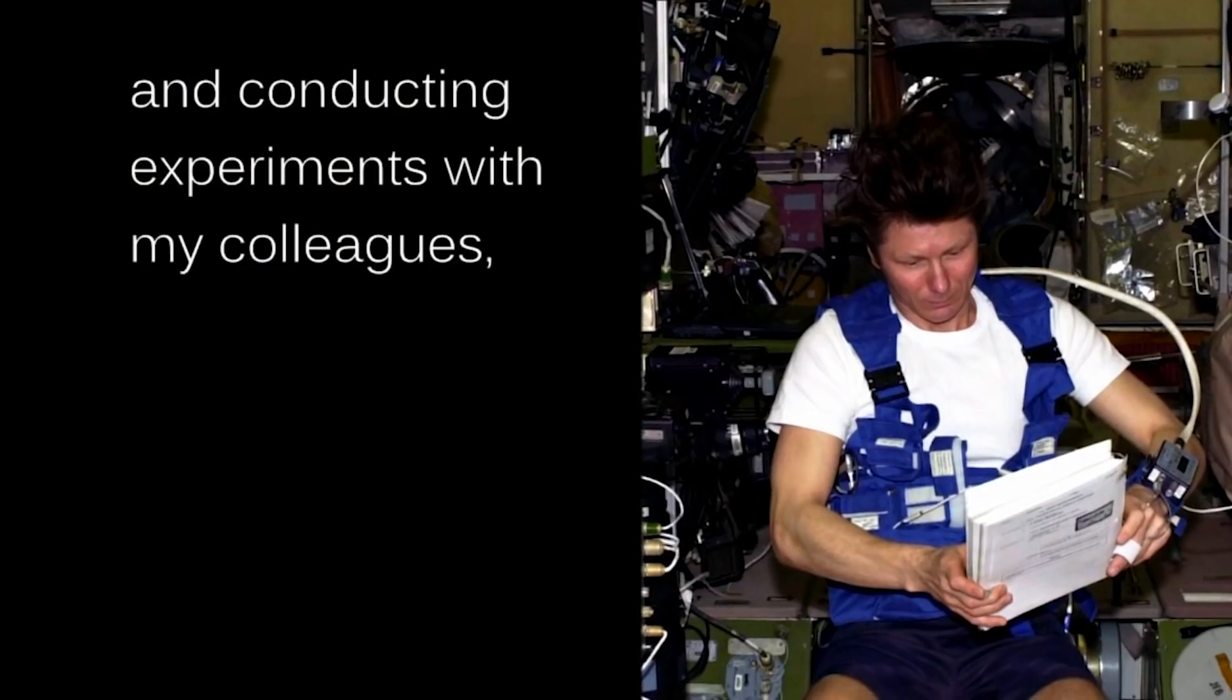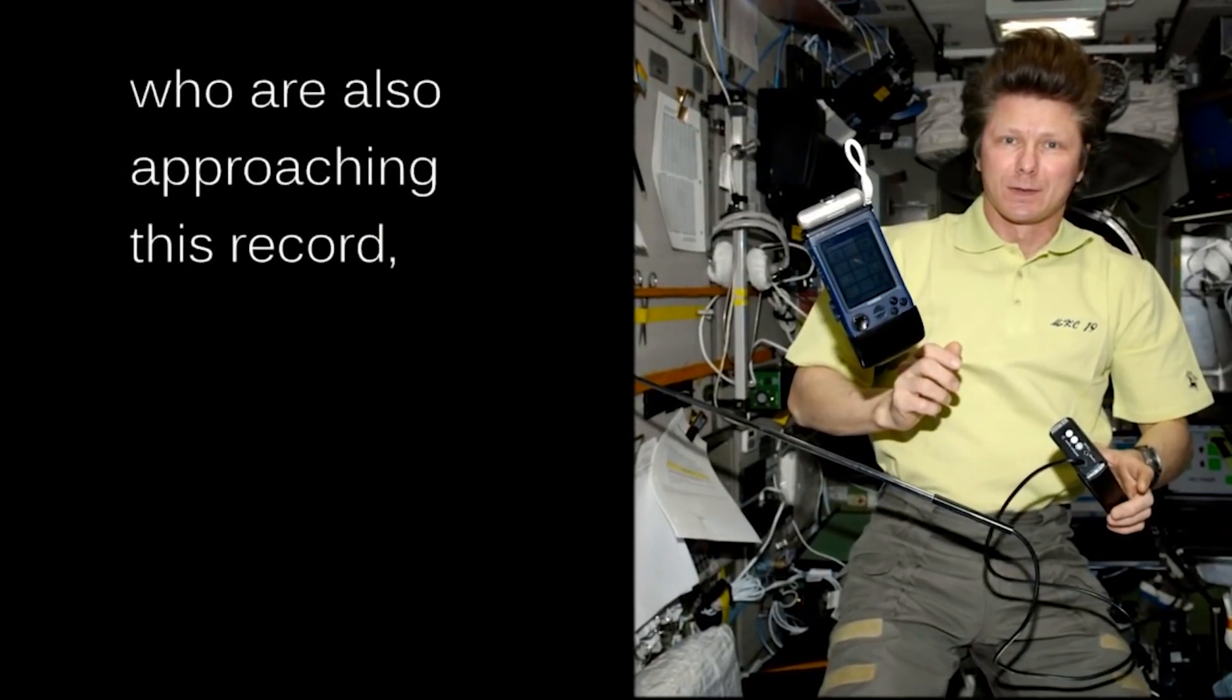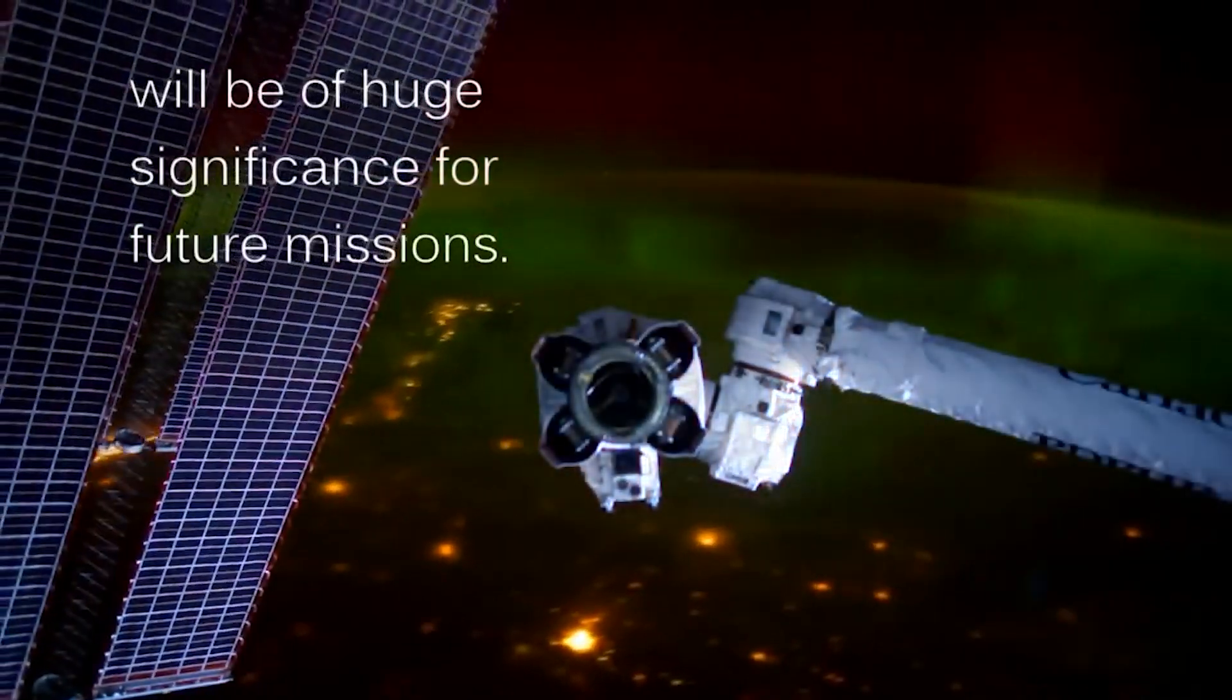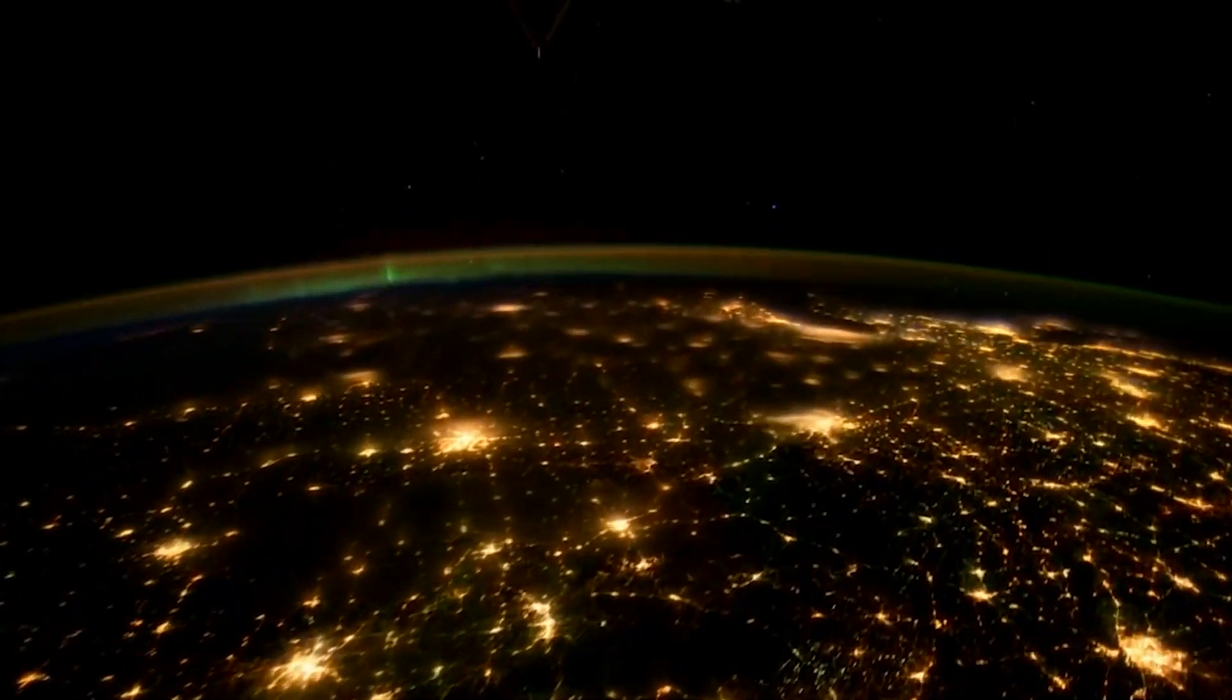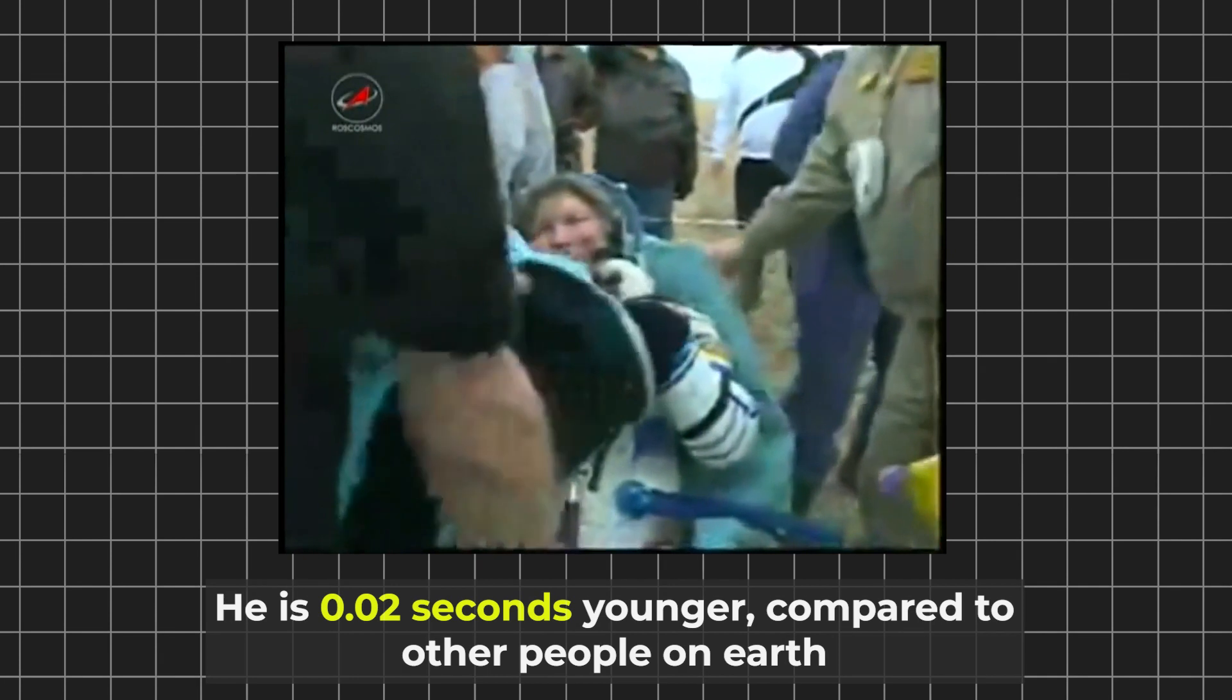There are many students in the space. And the three experiments with me and my colleagues, which are also close to that record, this will be interesting for the next missions. The astronaut of the Russian Federation, Padalka Gennady. In comparison to the people on Earth, he is 0.02 seconds younger.